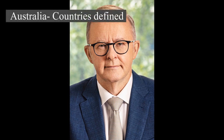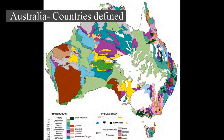Australia, officially the Commonwealth of Australia, is a sovereign country comprising the mainland of the Australian continent, the island of Tasmania, and numerous smaller islands. With an area of 7,617,930 square kilometers, Australia is the largest country by area in Oceania and the world's sixth largest country.